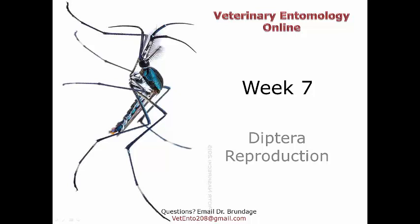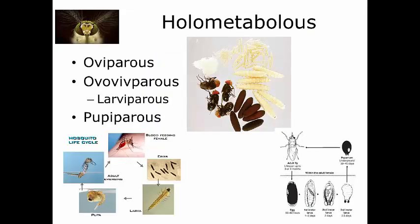Let's get into how Diptera reproduce. Remember from the beginning of the semester we talked about different types of reproduction — we'll be using those terms again. Diptera, as an order, are holometabolous, meaning they have a complete life cycle: egg, larvae, pupae, adult. Most Dipteran females lay eggs, so overall the Diptera are termed oviparous — an organism that lays eggs into the environment.